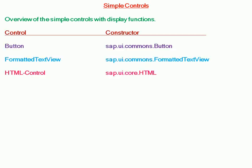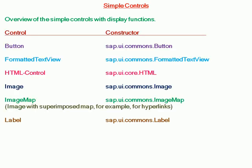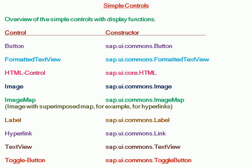Overview of simple controls with display functions: for each control like button, image, label, or hyperlink, you can see the constructor. So for button, it is sap.ui.commons.button.